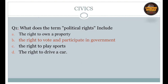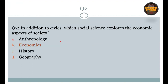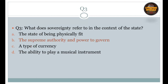Question number 1: What does the term 'political right' include? The right option is B: the right to vote and participate in the government. Question number 2: In addition to civics, which social science explores the economic aspect of society? The right option is B: economics. Question number 3: What does sovereignty refer to in the context of the state? The right option is B: the supreme authority and the power to govern.